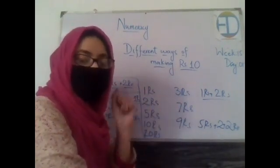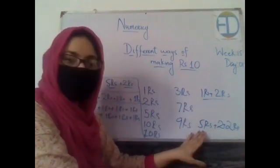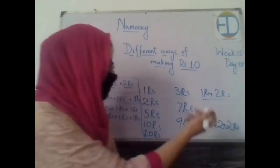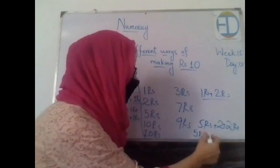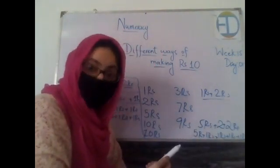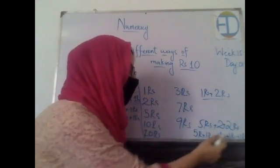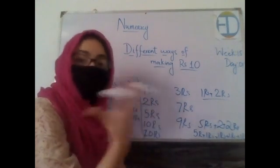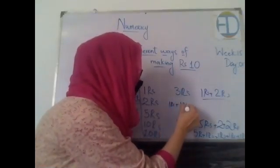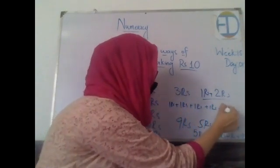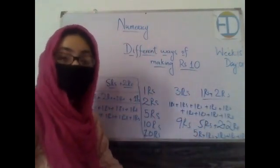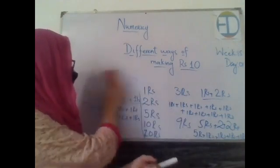Now for nine rupees — how many combinations can we make? The first: one coin of five rupees and two coins of two rupees — five plus four equals nine. The second: one coin of five rupees and four coins of one rupee — also nine. The third: nine coins of one rupee. This is how we make combinations.